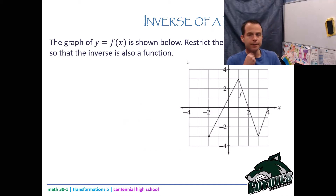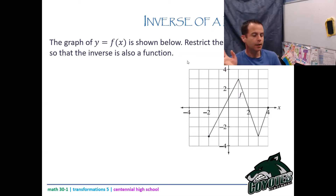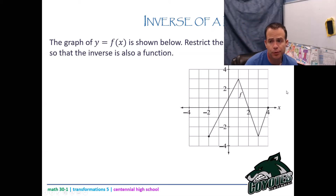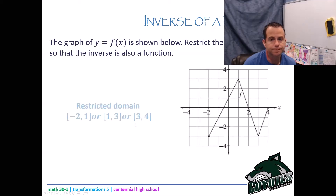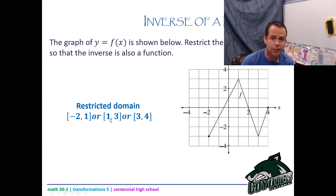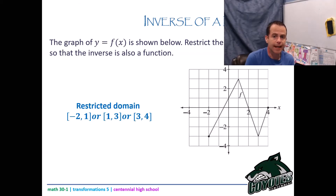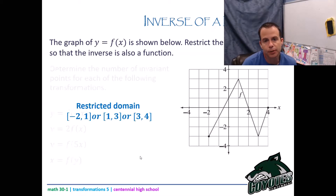The graph of y equals f of x is shown. Restrict the domain of f of x so that the inverse is also a function. Just pick any line segment with no change of direction. I could go negative two to one, or one to three, or three to four. I'm writing these domains in interval notation — from bottom number to top number, using square brackets if I can be that number and curved brackets if I can't.